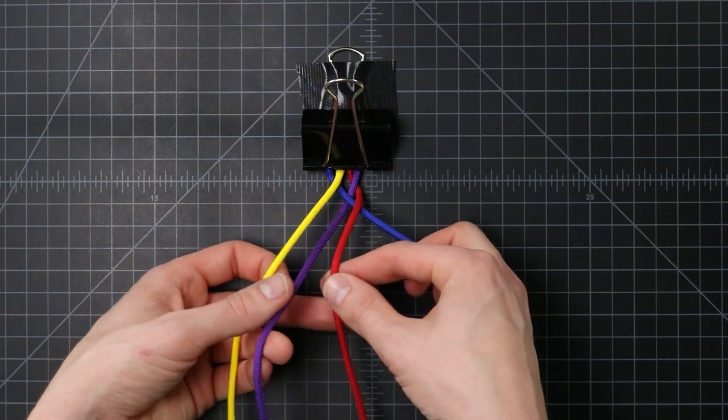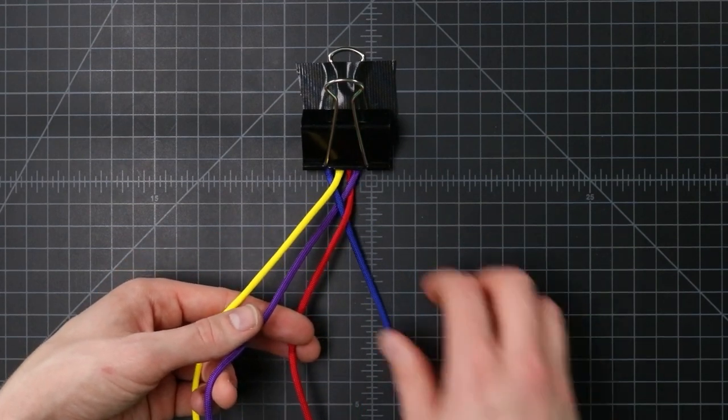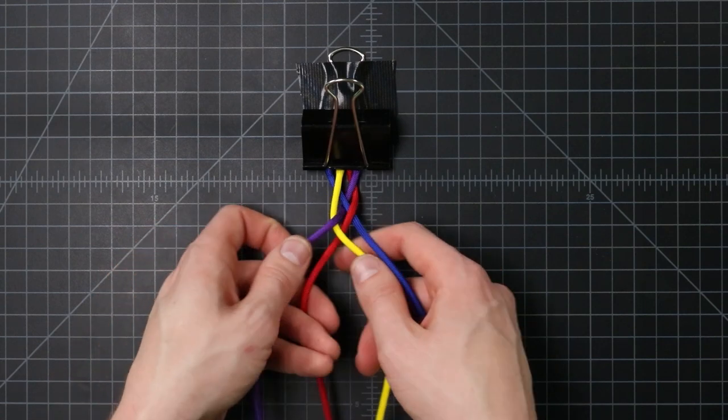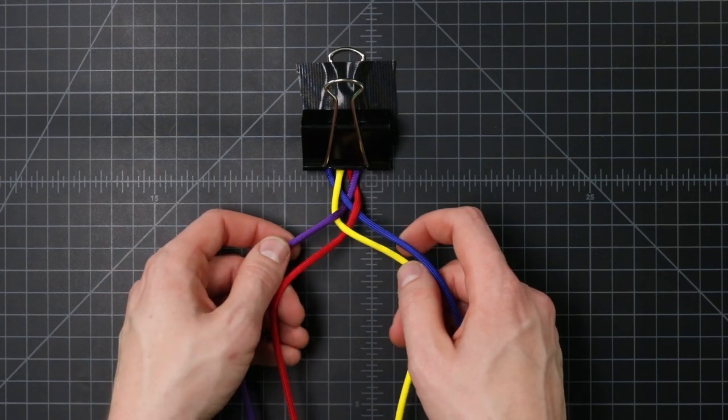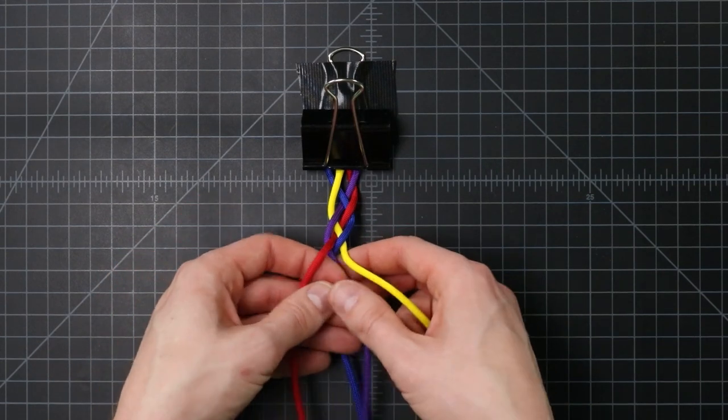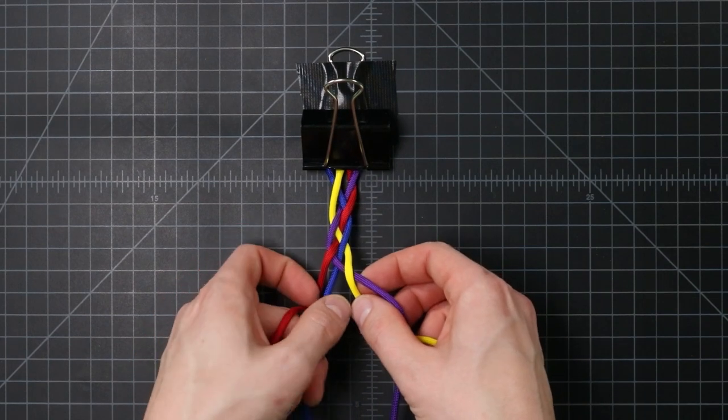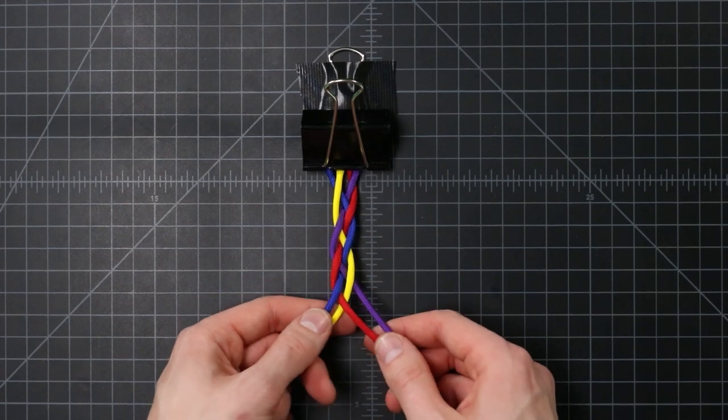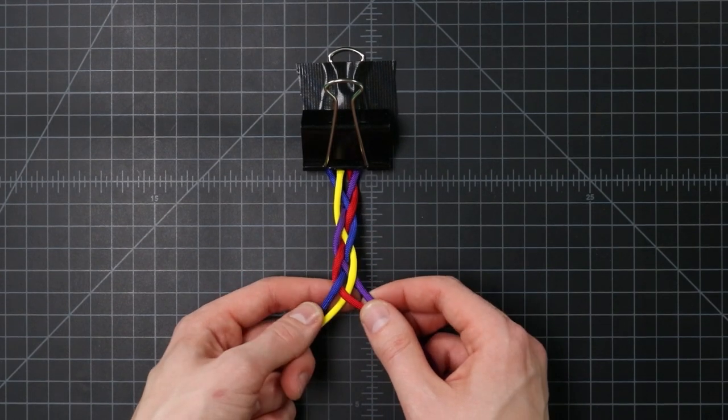So to do that again, red over to the middle, yellow underneath, purple, but over red. We'll keep going here. So there's our four-strand braid, otherwise known as a plate.